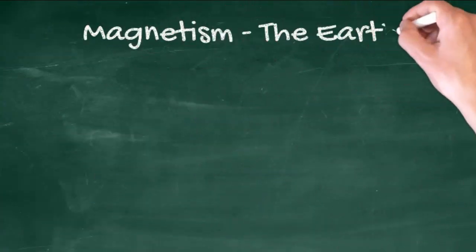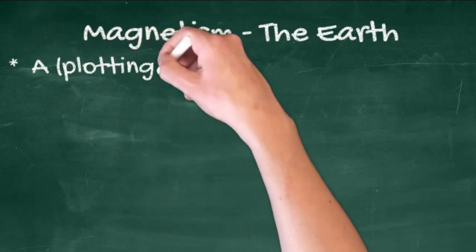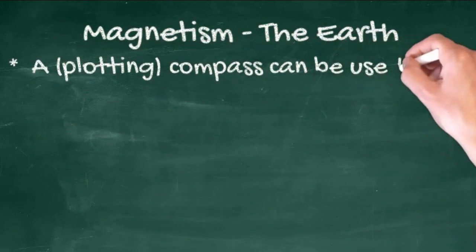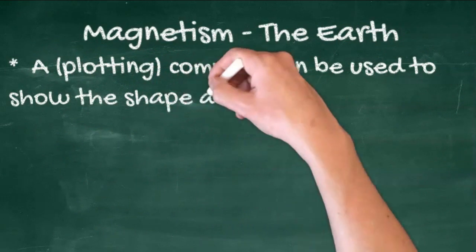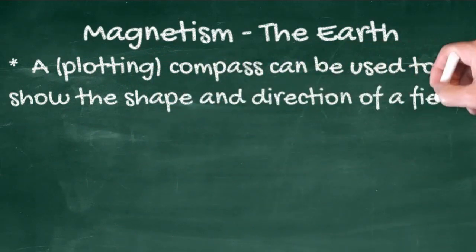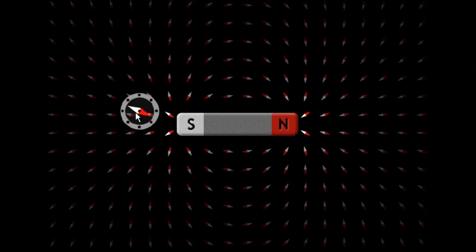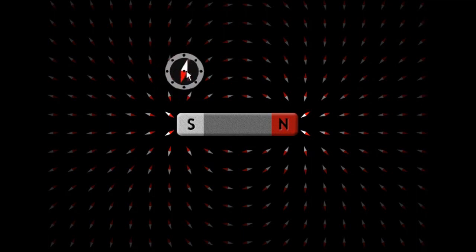The earth too has a magnetic field, and a compass can be used to show the direction of the field lines associated with the earth. This animation shows a plotting compass being used to follow the field lines as they go, in this case from south to north.